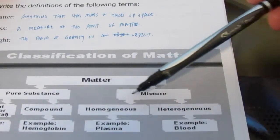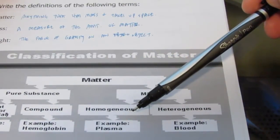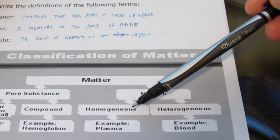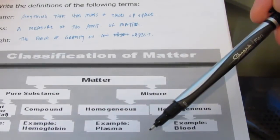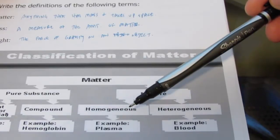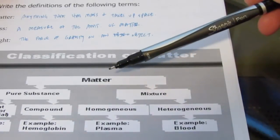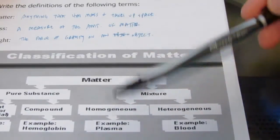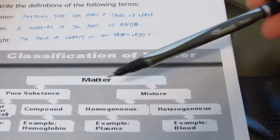And mixtures are either homogenous, which are also known as solutions, or heterogeneous. So homogenous would be something like sugar dissolved in water. It's uniform throughout. Perhaps a mixture of zinc with copper to form brass. We don't have layers of zinc and then copper and then zinc and then copper. It's a nice homogeneous solution. It's a metallic alloy.